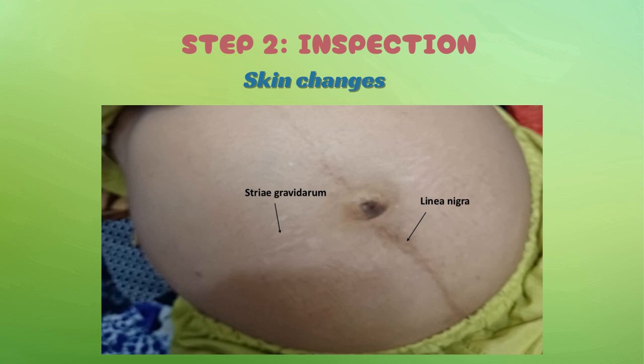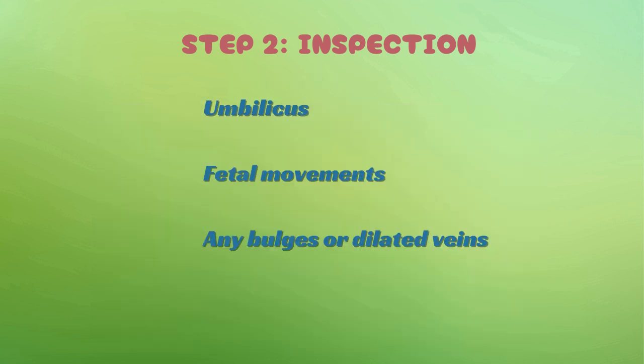Now look at the skin. A dark line running down the midline is called the linea nigra — totally normal due to hormonal changes. Look for striae gravidarum, also known as pregnancy stretch marks. Then check for any scar from a previous cesarean section or other incisional scars, and look for any skin lesions or infections. Look at the umbilicus: if it's everted, that's normal in advanced pregnancy.